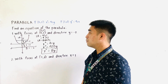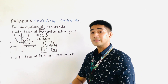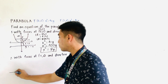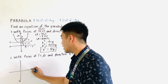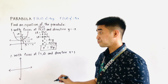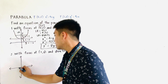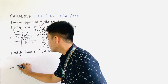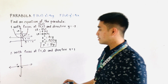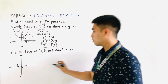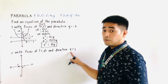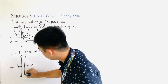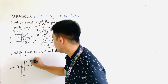For the second example, we need to find the equation of the parabola with focus at (negative 1, 0) and directrix x = 1. Let us first plot the points. The focus is located at (negative 1, 0). This is our focus, and this is our vertex. The directrix is the line x = 1, which is a vertical line. This is our directrix at x = positive 1.